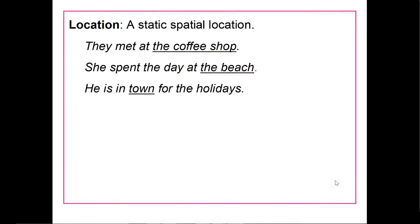A location is a static spatial location — not one that's moving. They met at the coffee shop: the coffee shop is in one place. She spent the day at the beach — a single place. He is in town for the holidays. Basically, a location is when the action of the sentence takes place at a single location.